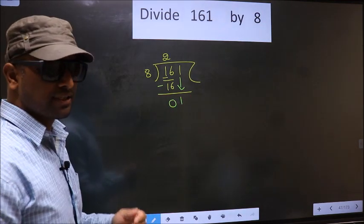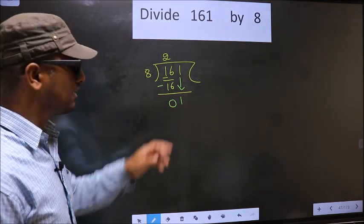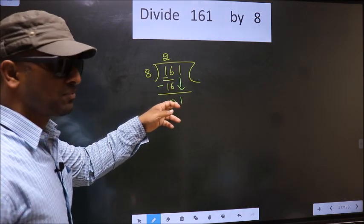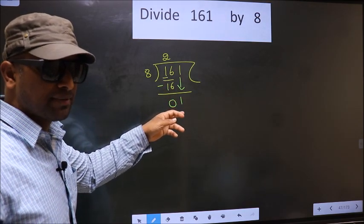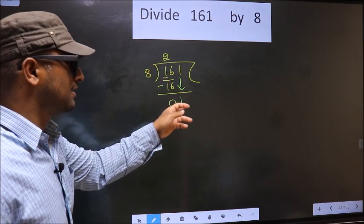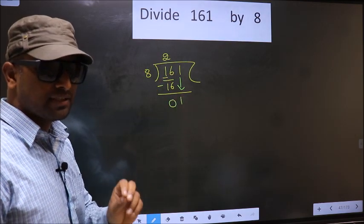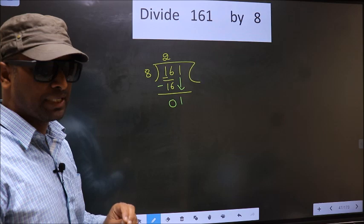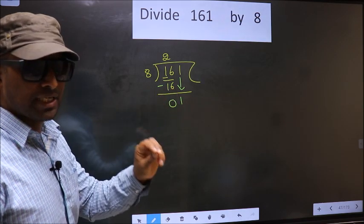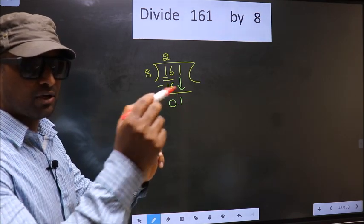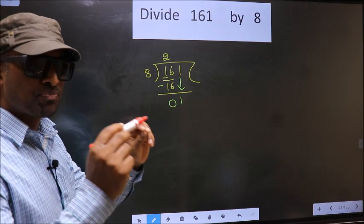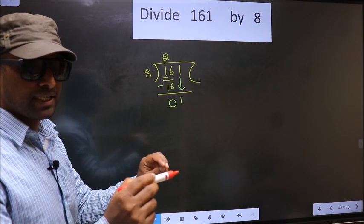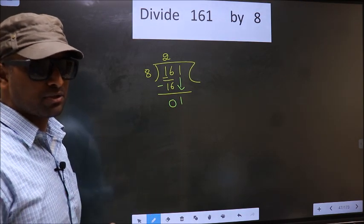So what many do is they put a dot and take 0 here, which is wrong. Just now you brought the number down, and in the same step you want to put a dot and take 0. That is wrong. I repeat. Bringing the number down and putting a dot and taking 0, both at the same step, you are not supposed to do.